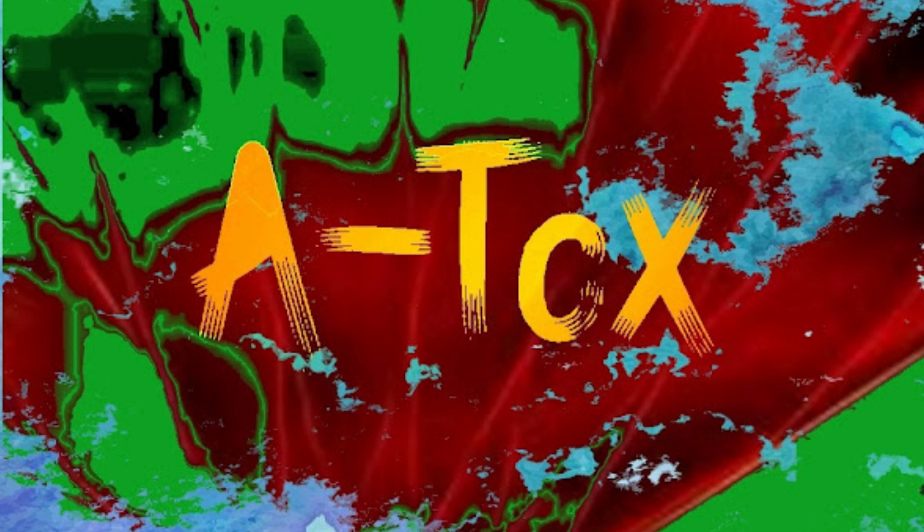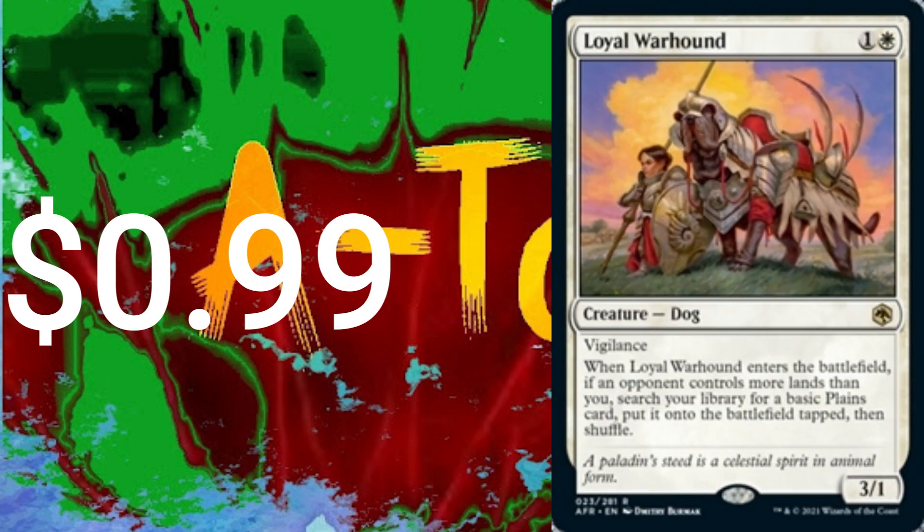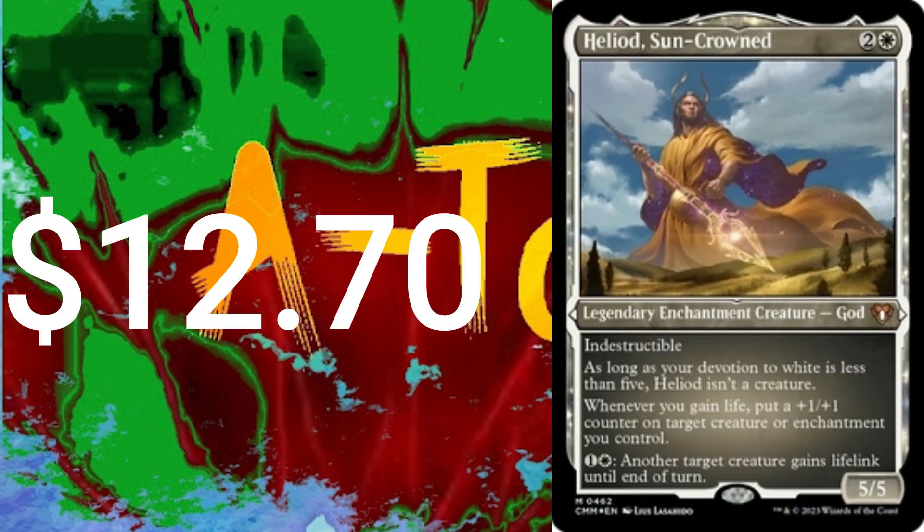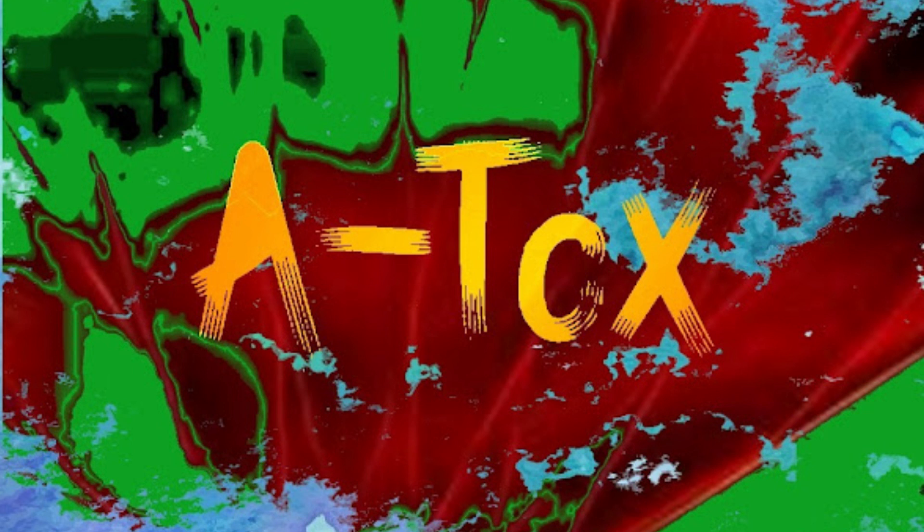There's 19 creatures in this deck. Walking Ballista, Weathered Wayfarer, Deep Gnome Terramancer, Knight of the White Orchid, Loyal Warhound, Selfless Spirit, Stoneforge Mystic, Devoted Witness, Fiend Hunter, Heliod Suncrowned. Because you gotta have that combo of Suncrowned and Ballista.